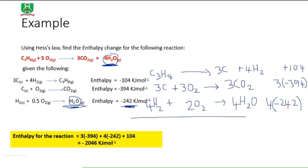Now let us add all three equations and see if we get our desired equation. But before we add them, let us eliminate any spectator species. Remember that spectator species are species that appear on the left-hand side as well as on the right-hand side — any species found on both sides can be eliminated.